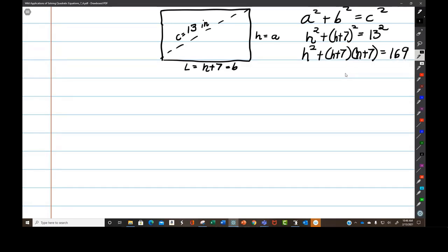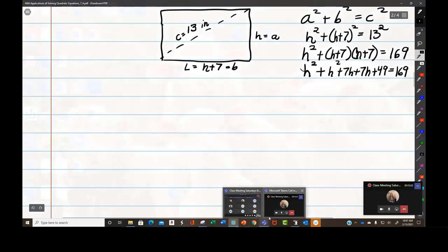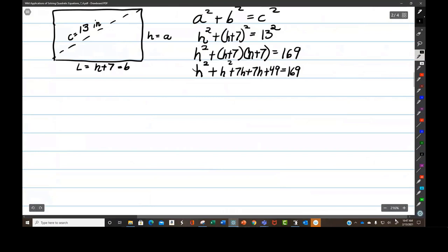So H squared plus (H plus 7) times (H plus 7). H squared plus 7H plus 7H plus 49 equals 169. That's the last perfect square I have memorized. That will be H squared plus H squared plus, when I multiply these together, I get H squared plus 7H plus 7H plus 49 equals 169.